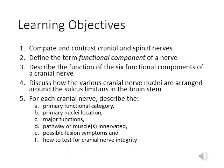In this section we will talk about the difference between the cranial nerve and the spinal nerve, and learn the functional components of a cranial nerve, learn the cranial nuclei arranged in the brainstem, and for each cranial nerve we will learn about their function, their nuclei location, their pathway or the muscles innervated, and also we will talk about possible lesion symptoms and how to test for cranial nerve injury.